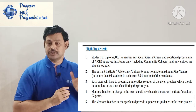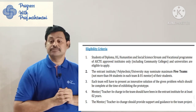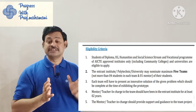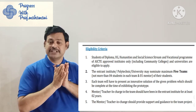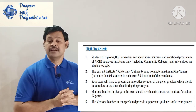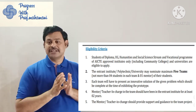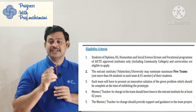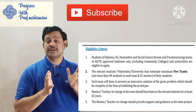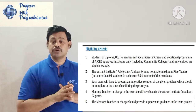Each team must present an innovative solution for the problem, and the prototype should be complete at the time of exhibiting. A mentor or teacher in charge must have at least two years of experience at the particular institution where they are applying. Each student team of five members will have one team leader and one associated mentor or teacher. That is the complete eligibility criteria.